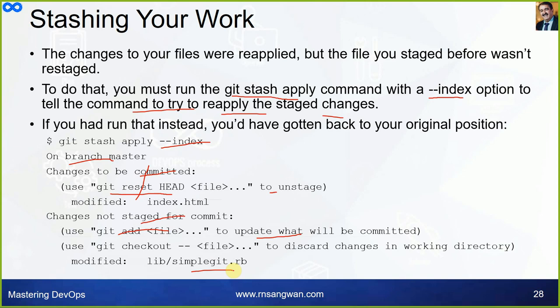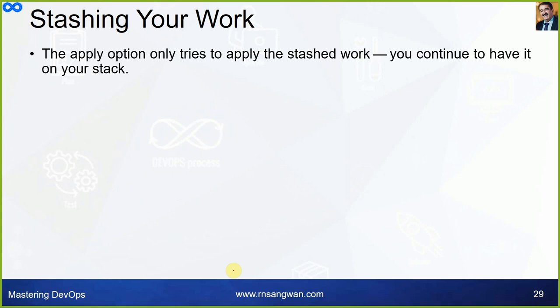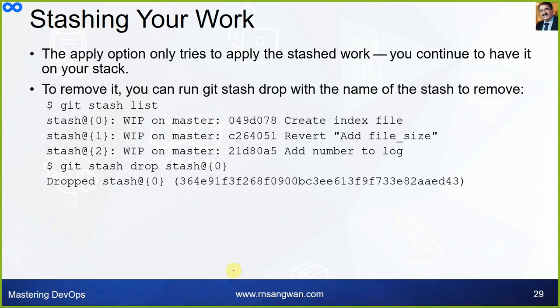The apply option only tries to apply the stash work — it continues to have it on your stack. To remove it, run git stash drop, followed by the stash name: git stash drop stash@{0}. For example, to drop stash number zero: git stash drop stash@{0}, and that stash will be dropped. That's all for this session. Thank you very much.